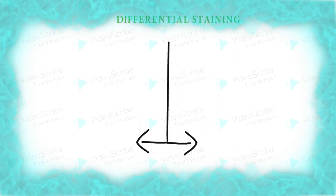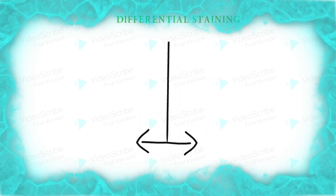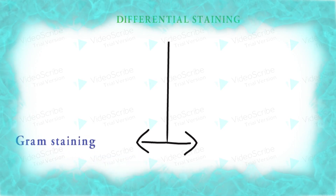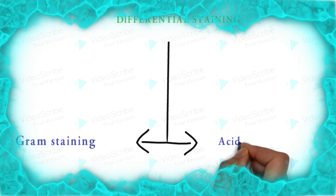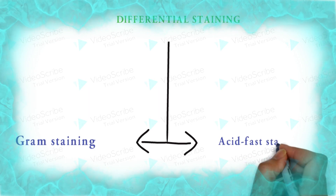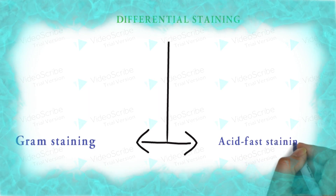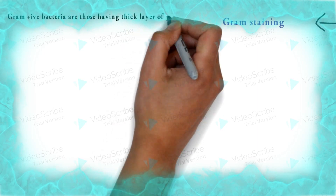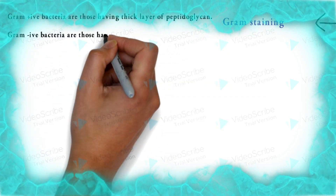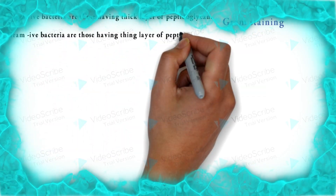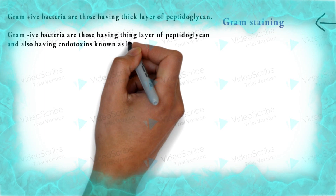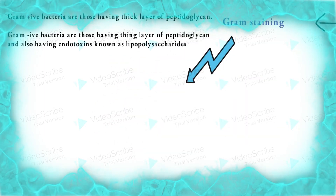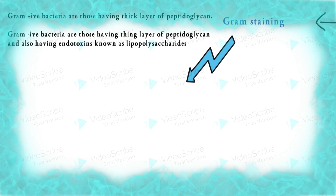Differential staining can be broadly classified into two types: the famous Gram staining and acid-fast staining. In Gram staining, Gram-positive bacteria are those having a thick layer of peptidoglycan, while Gram-negative bacteria have a thin layer of peptidoglycan, which is the basis of Gram staining.